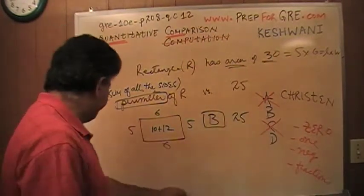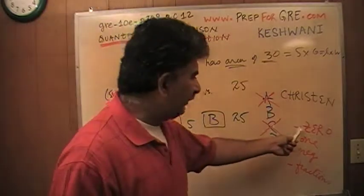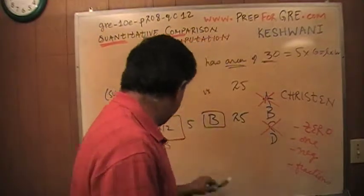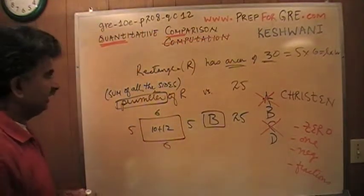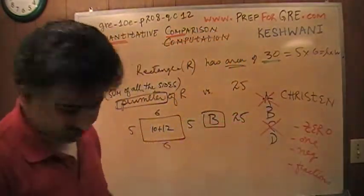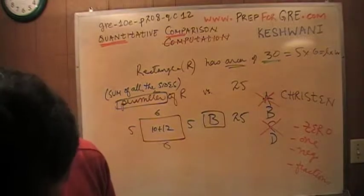Well, of course, we cannot speak in terms of zero because you cannot have a side equal to zero. Let's try one. What if instead of my rectangle looking like this, I'm looking for a rectangle of area of 30, instead of being five by six, let me pick a different marker that is a little bit darker and a different color.